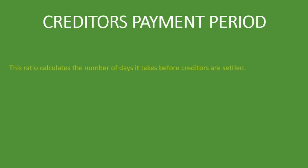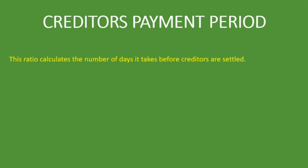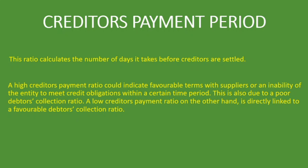So what is the creditors payment period? This ratio calculates the number of days it takes before creditors are settled. It gives you the average number of days in a given period — usually one year — it takes before you pay your creditors back. A high creditors payment period could indicate favorable terms with suppliers or an inability of the entity to meet credit obligations within a certain time period.